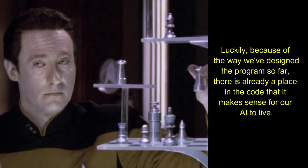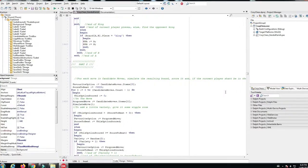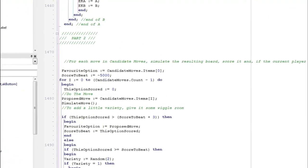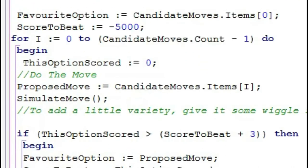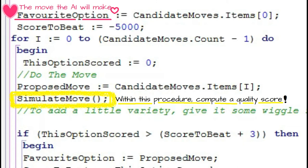Luckily, because of the way we designed the program so far, there is already a place in the code that it makes sense for our AI to live. At the start of every turn, the simulate move procedure gets run on each candidate move and analyzes the resulting board position to see if the current player's king would be in check. At the same time, we can analyze the resulting board position for other positive and negative characteristics and assign it a quality score so the AI can choose a good move. I created a string variable called favorite option to hold the move the AI currently intends to make in our four-digit notation and an integer variable called score to beat to hold that move's quality score.